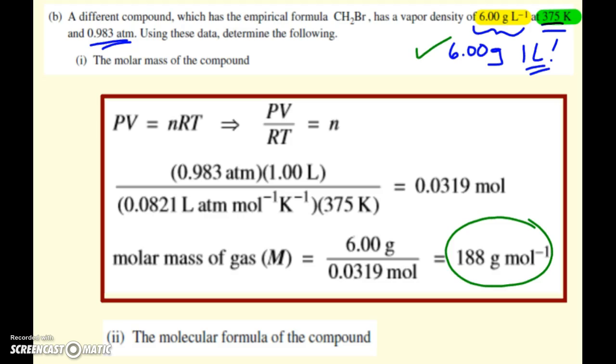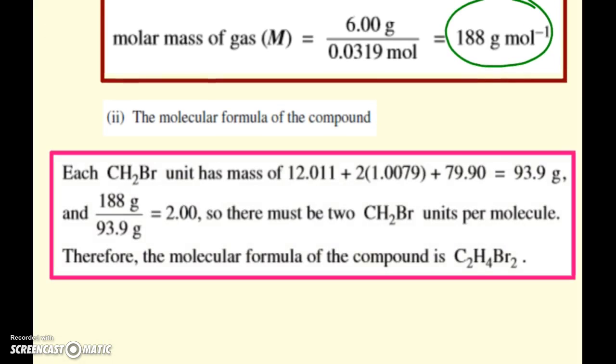The second question then asks, what is the molecular formula of the compound? They gave us the empirical formula. If you remember, we just compare the molar masses. So the empirical formula mass, CH2Br, is 93.9 grams. So 188 divided by 93.9 is 2. Or you could say, oh, that's like 94 grams, which is half of 188. So that just means you've got to multiply your empirical formula by 2. And so that's how we end up with our molecular formula, C2H4Br2. Alright. Hope this helps. See you soon.